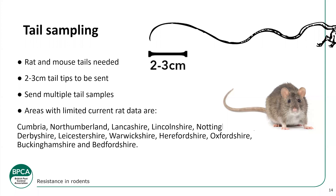Samples are stored up until there's enough for a machine load, then run all at once — so the more samples sent in, the more often tests can be run and the quicker results will be published. Some tail sampling has taken slightly longer recently; this is likely because they're waiting for a full machine load. Testing has also recently moved from Reading University to APHA, so there may be some adjustment in communications during that transition.